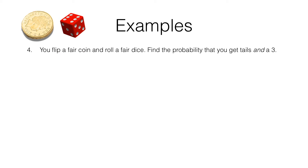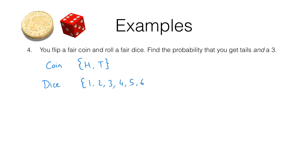In question four you flip a fair coin and you roll a fair dice, so this is a combined experiment involving two different objects. This is different from before — in the first two questions we had two coins, in question three we had two dice, but now we have a coin and a dice. We need to find the probability that we get tails on the coin and a three on the dice. The sample space for a coin is heads and tails — equally likely since it's a fair coin. The sample space for a dice is one through six, and each outcome is equally likely since it's a fair dice.